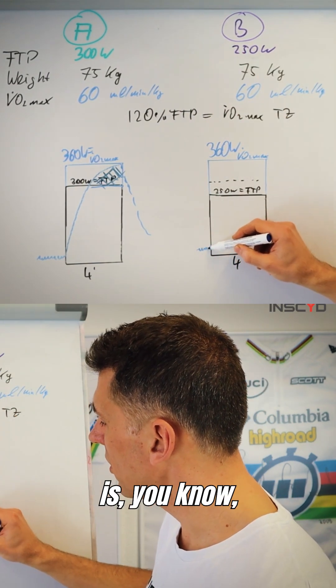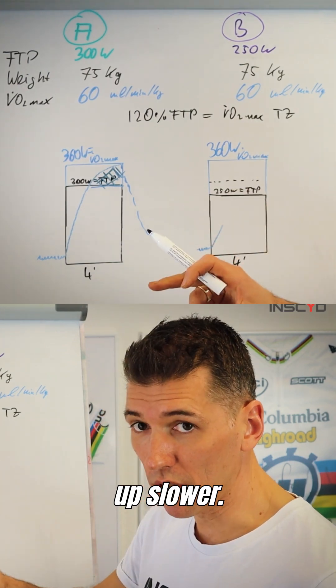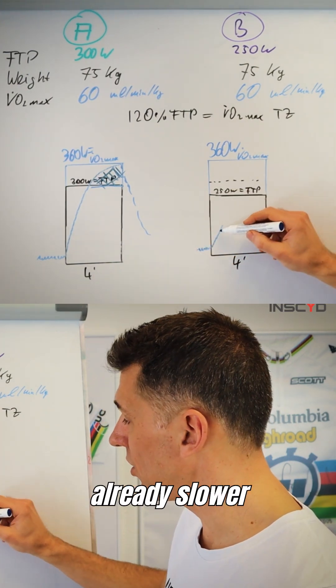VO2max, VO2 down here, you know, resting value. Then it goes up, and it will go up slower, okay? So the kinetics is already slower, because the intensity is not that high.